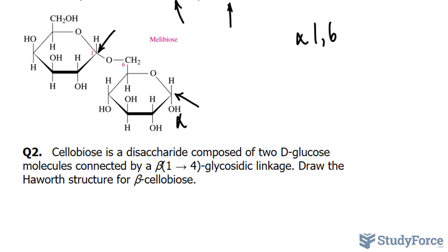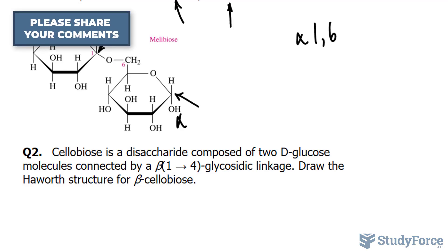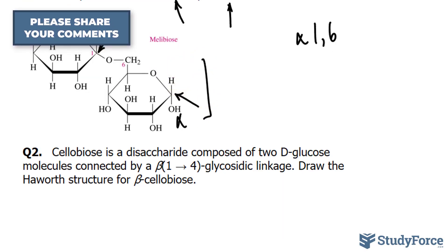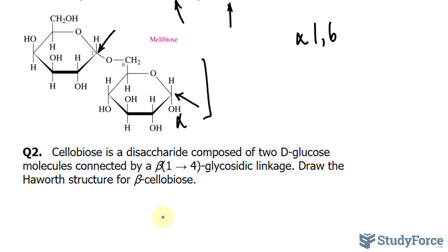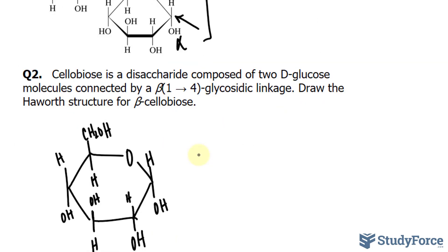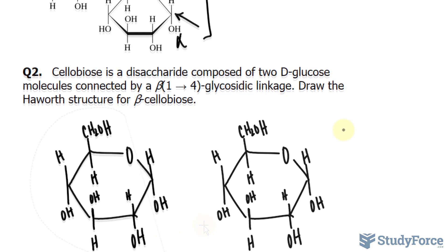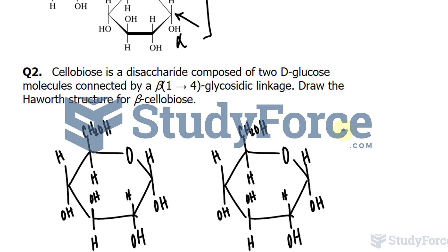In question 2, Solibios is a disaccharide composed of two glucose molecules connected by a beta 1,4-glycosidic bond. Draw the Haworth structure for beta Solibios. For this, I'll use this glucose molecule and redraw it. So that's one of my glucose molecules, and I'll double this — now we have two monomers of D-glucose.